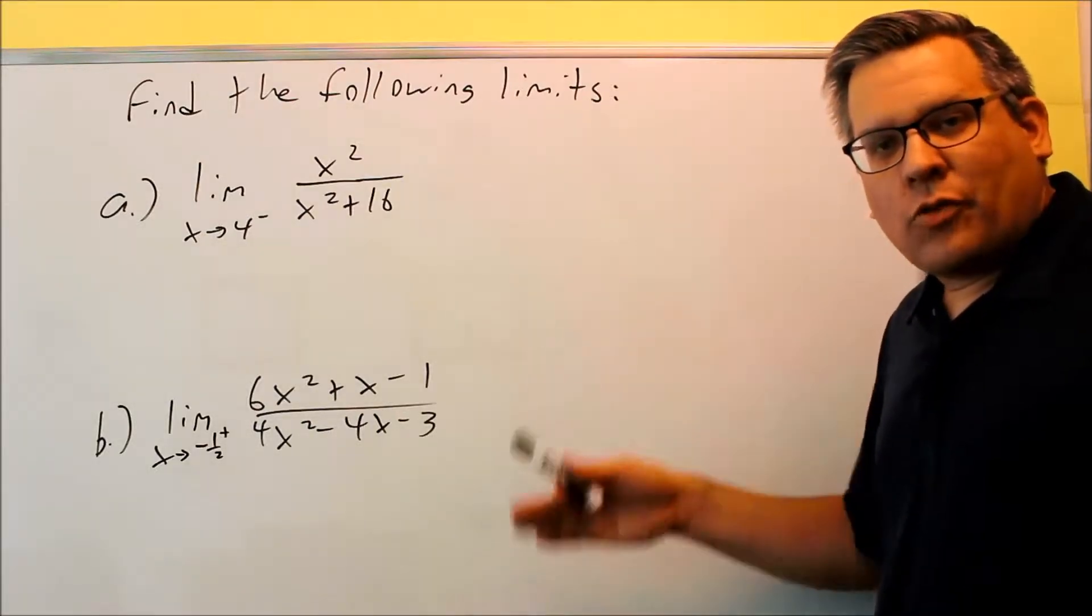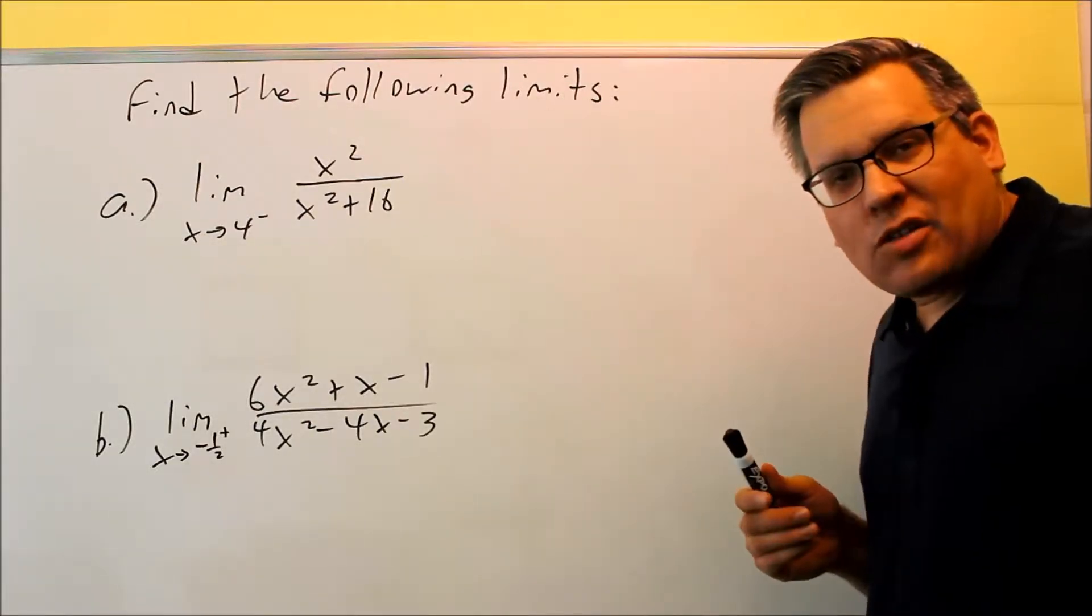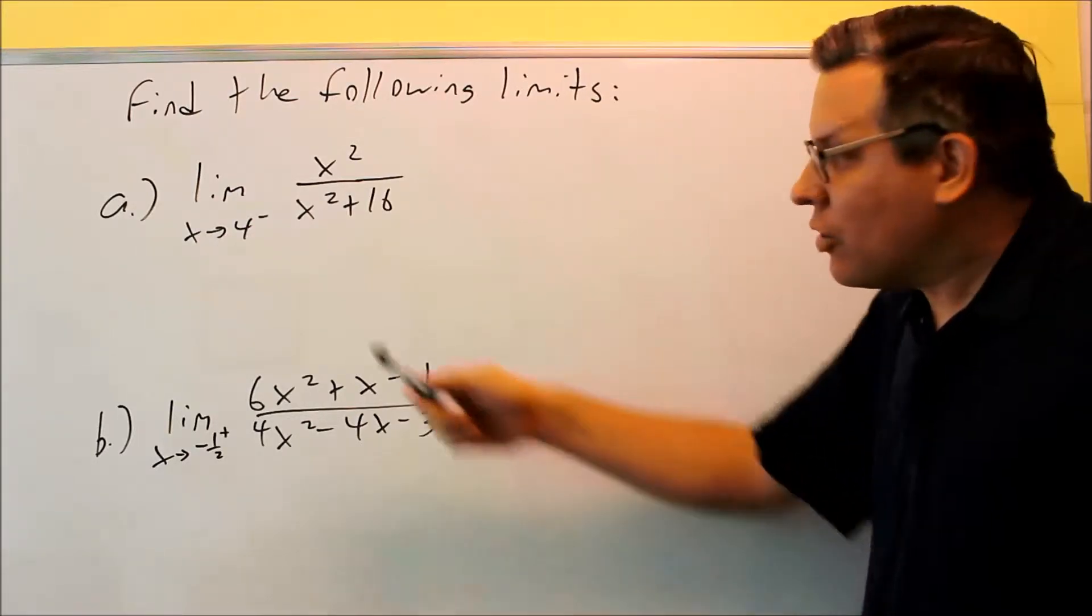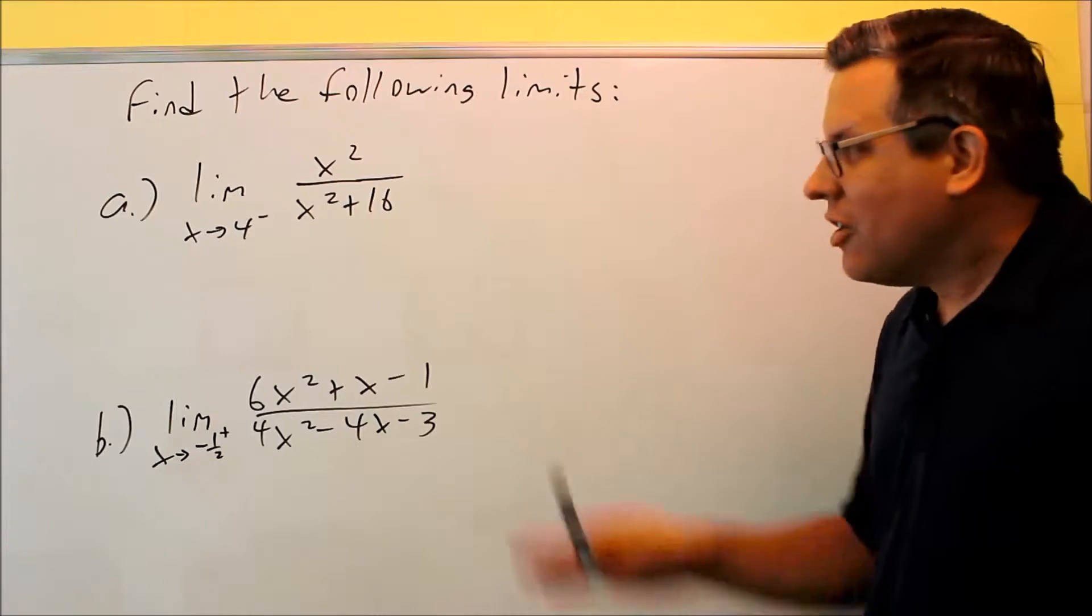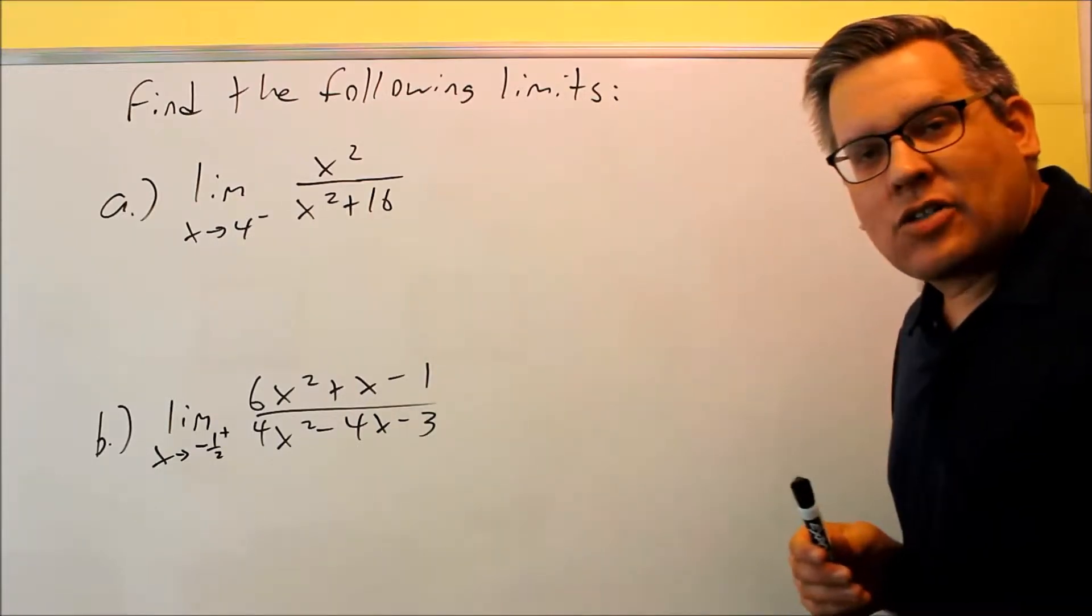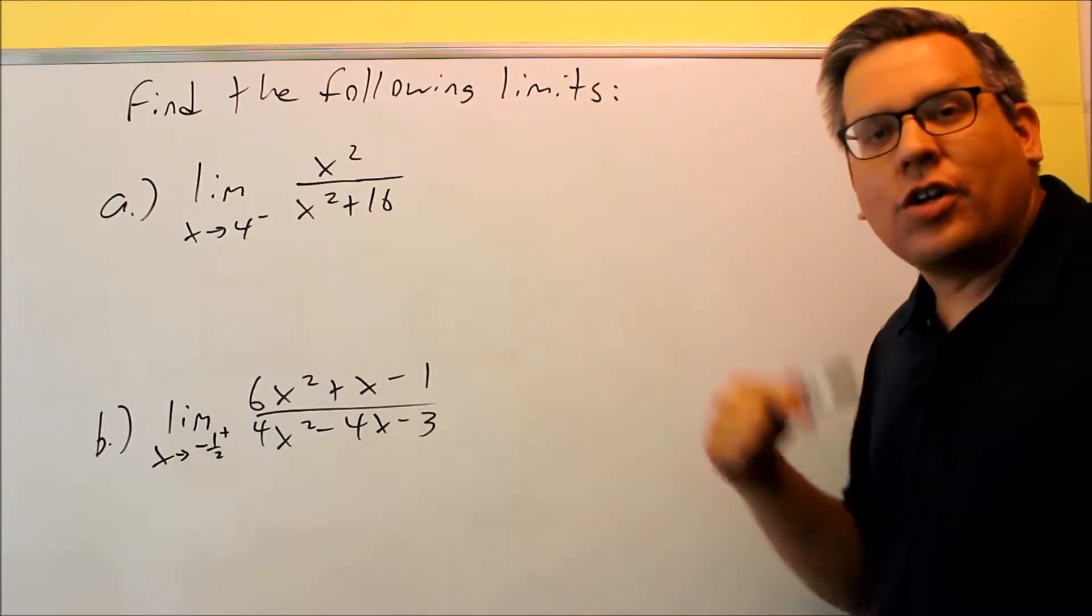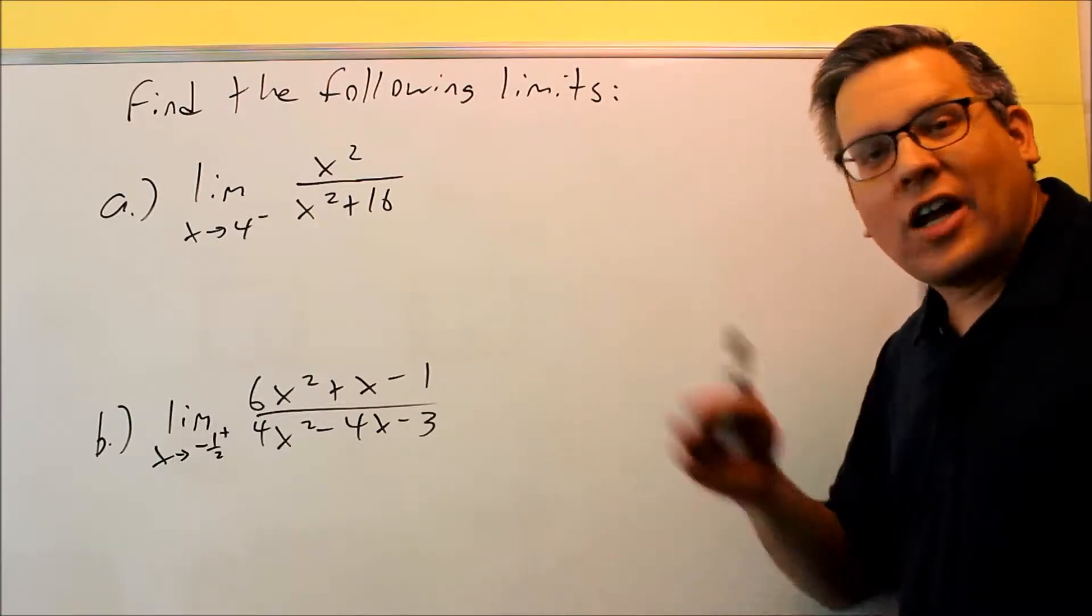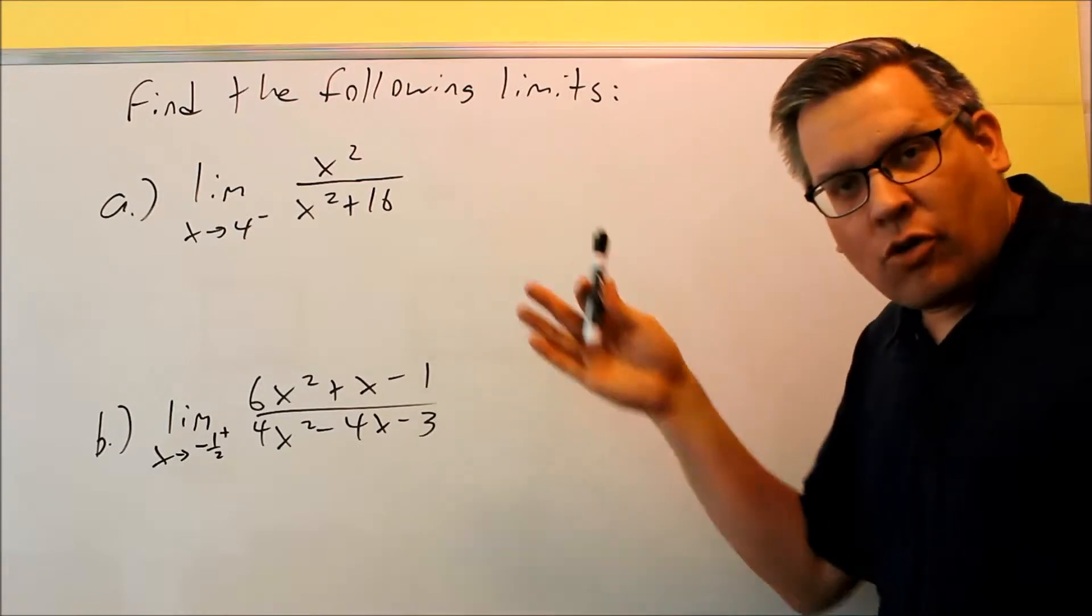So in the previous video, if you watched that one, what I did was I did these by picking a test number. I picked a number that was slightly larger or slightly smaller than the number it was going to. I plugged it in and got the answer that way. These are ones that went to infinity, negative infinity. So the question is, do you always have to use that process for any kind of one-sided limits?